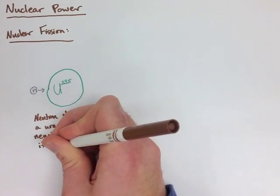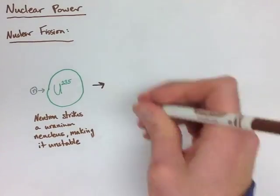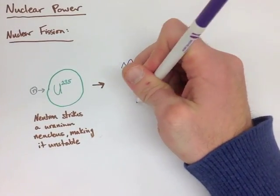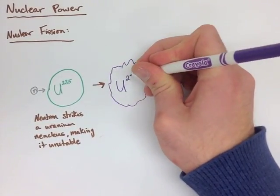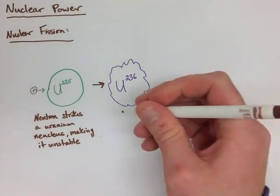What happens next is the uranium nucleus starts to break down. It starts to actually release energy.